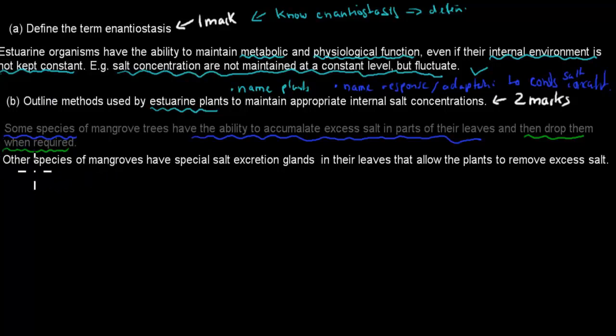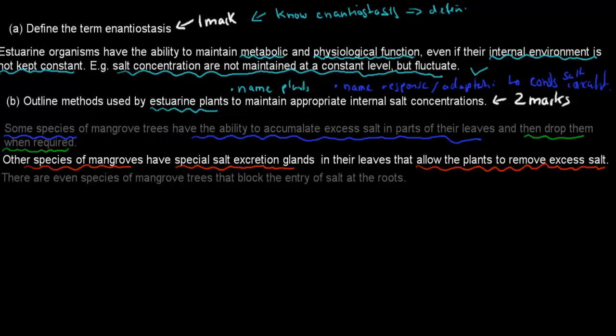Other species of mangrove trees have special salt excretion glands in their leaves that allow the plants to remove excess salt. These were the ones that can just shoot salt out of their leaves. And a third mechanism is there are species of mangrove trees that block the entry of salt at the roots.